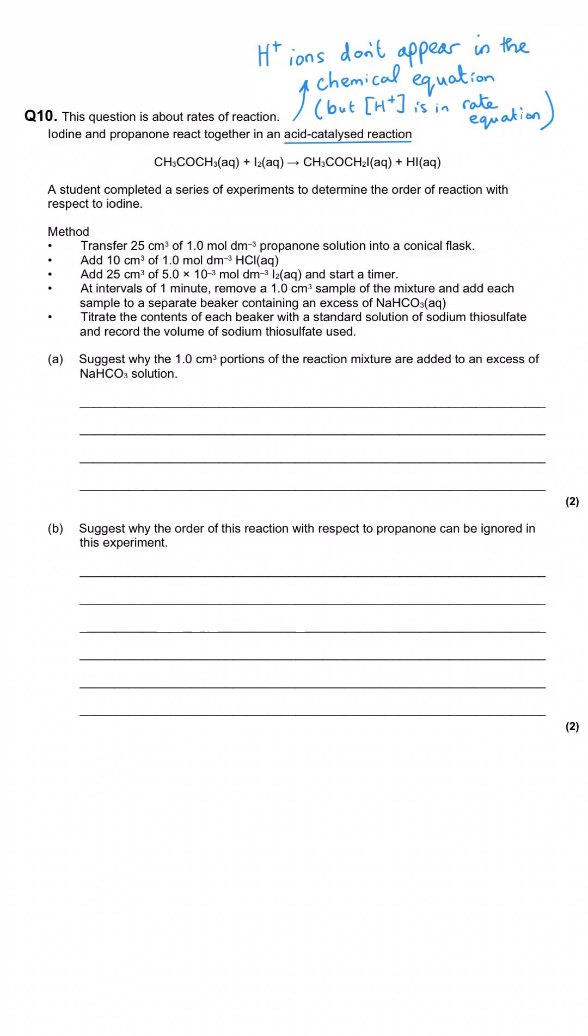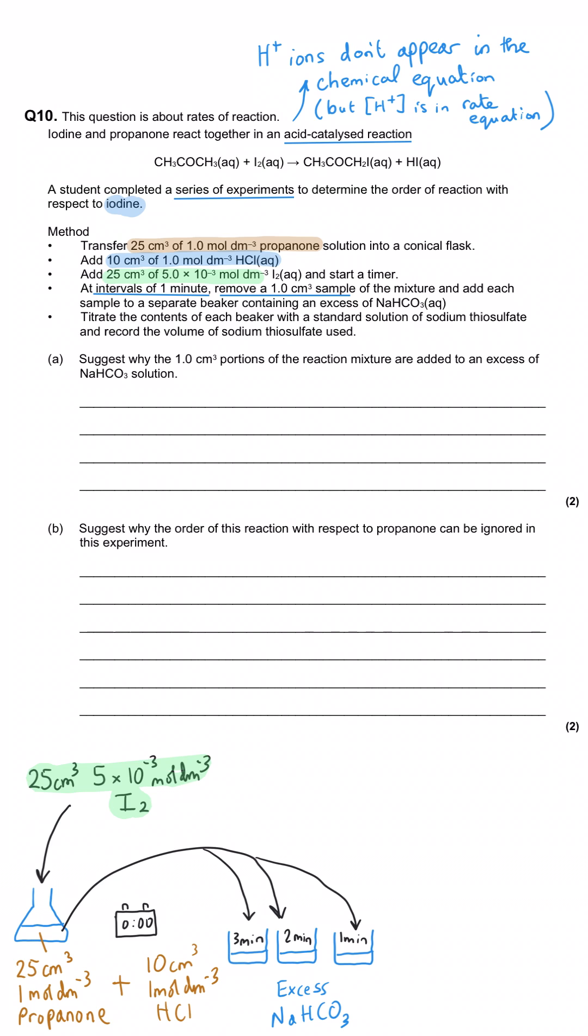A student completed a series of experiments to determine the order of reaction with respect to iodine. They transferred 25 cm³ of 1 molar propanone solution into a conical flask, added 10 cm³ of 1 molar hydrochloric acid, and then added 25 cm³ of 5×10⁻³ moles per dm³ of iodine and started the timer. At intervals of one minute they removed 1 cm³ samples and added each to a separate beaker containing excess sodium hydrogen carbonate. They then titrated the contents of each beaker with standard sodium thiosulfate solution and recorded the volume used.